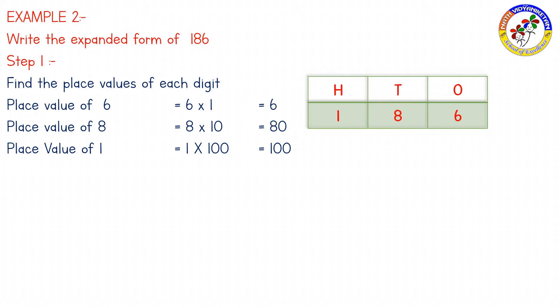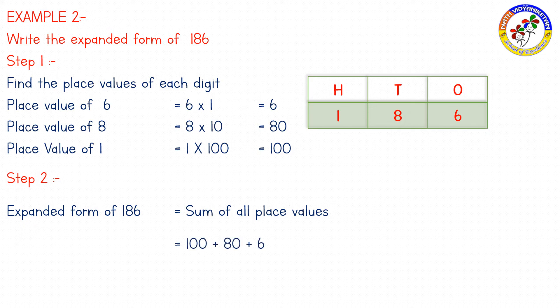Is it clear? Now, expanded form of 186 is 100 plus 80 plus 6. Sum of all place values, so 100 plus 80 plus 6. Therefore, the expanded form of 186 is 100 plus 80 plus 6. Is it clear?